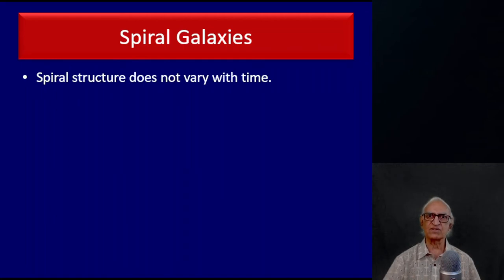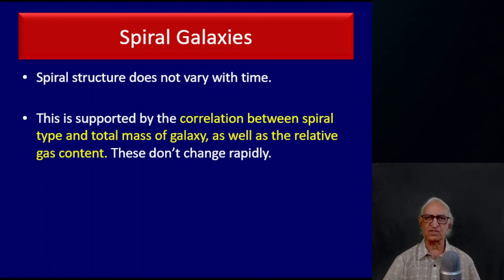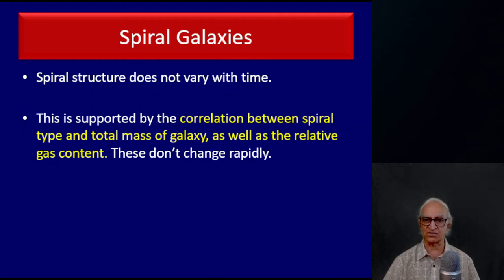The first thing to understand is that the spiral structure does not vary with time. How do we know this? There appears to be a correlation between the spiral type and the total mass of the galaxy, as well as the relative gas content of the galaxy. Neither the mass nor the gas content changes very rapidly, so we do not expect spiral structures to change very rapidly.